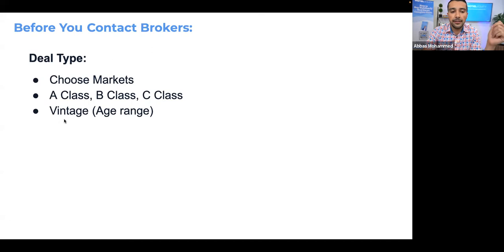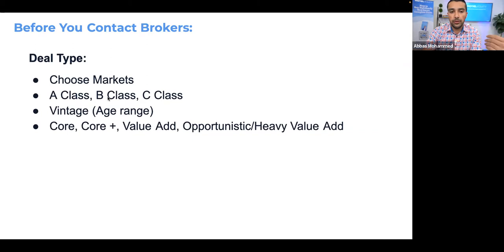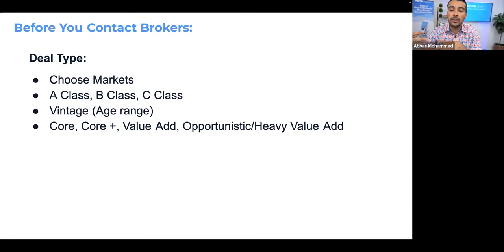Personally, we go after B-class properties most of the time — B and C, but mostly B — from 1980 to 2000, and we go after value-add deals in the Dallas-Fort Worth market. I like neighborhoods with $40,000+ household income, schools nearby, not on the outskirts. When I talk to a broker with this specific criteria, they know exactly what I'm looking for, and it's easier for them to connect the dots and say, 'I've got to reach out to Abbas about this one.'